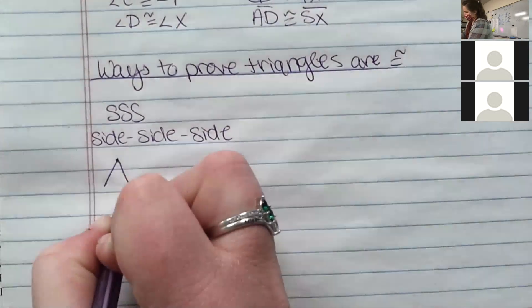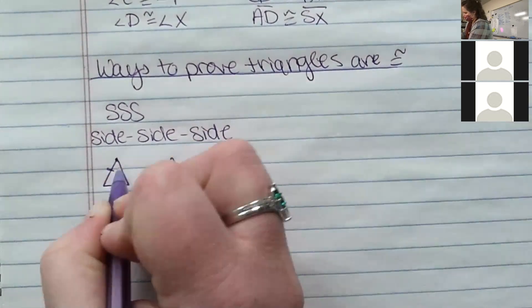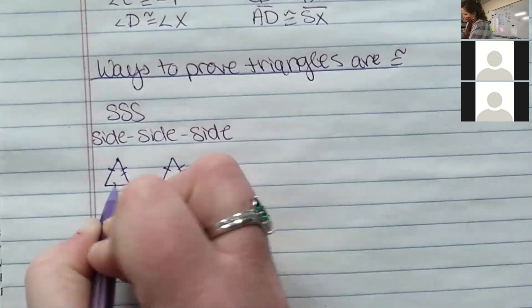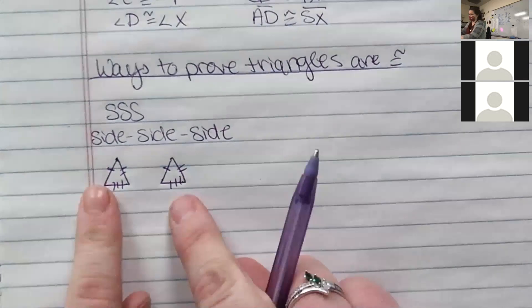So if you have a triangle and you have another triangle, and you know that each one of these sides is congruent to another side of that triangle, by SSS theorem you know that these two are congruent.